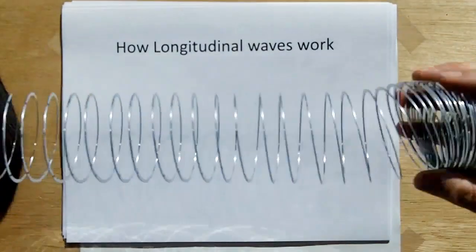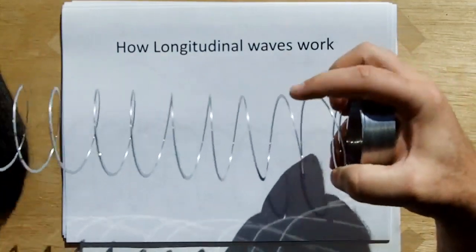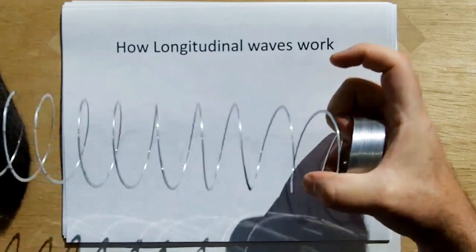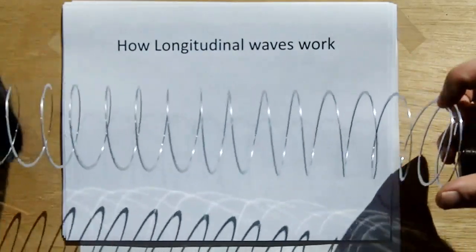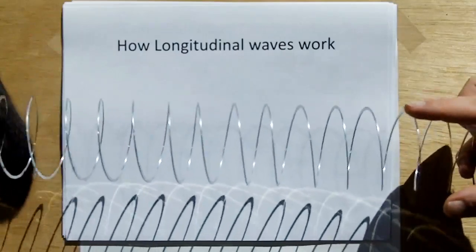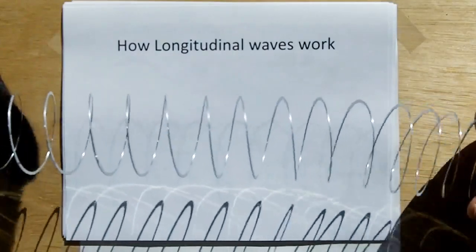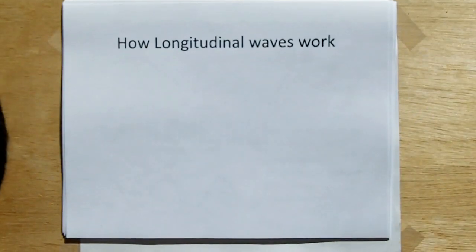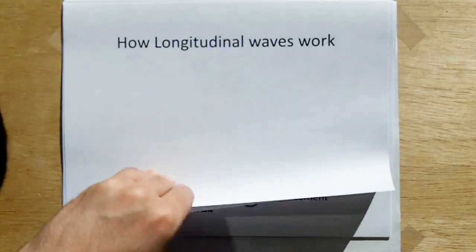Longitudinal waves, you do the same thing with a slinky, but instead of flicking it up like this, flick it in the direction. And you'll see, and that way you can probably see from the cameras, the longitudinal waves propagate back and forth along the wave. So that's how a longitudinal wave works.